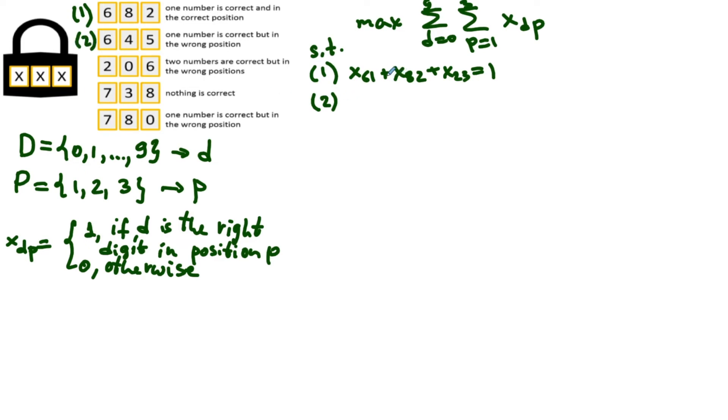Since one out of the three numbers in the second row is correct but in a wrong position, this means that each of the variables x six one, x four two and x five three is zero, and x six two plus x six three plus x four one plus x four three plus x five one plus x five two equals one. You are right, it's not too bad.